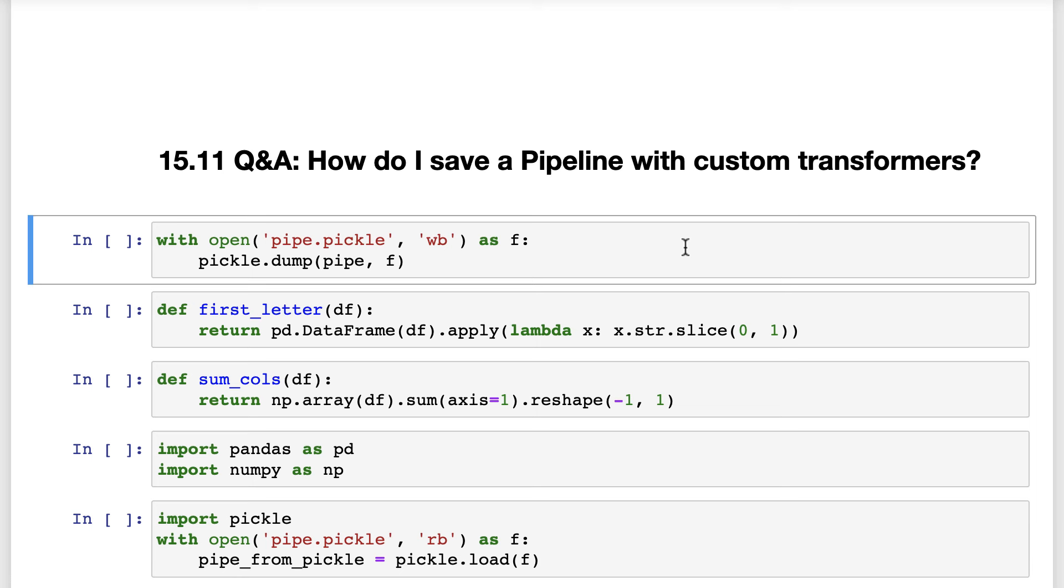If you save a pipeline using Pickle or Joblib, and the pipeline includes custom transformers, then the saved pipeline can only be loaded into a new environment if the functions it depends upon are defined in the new environment.